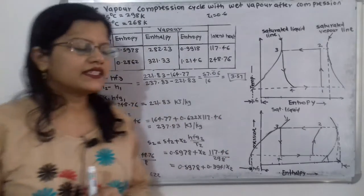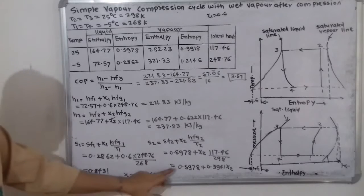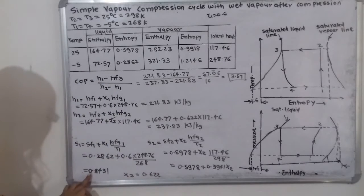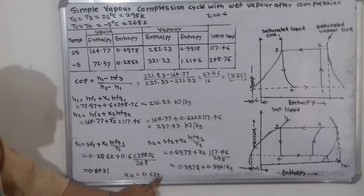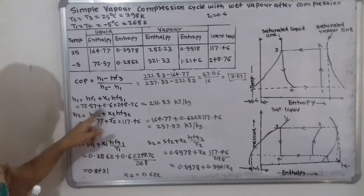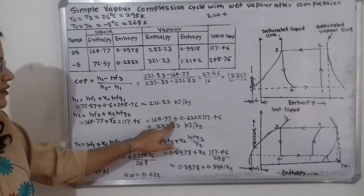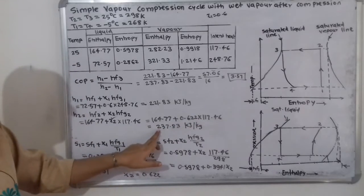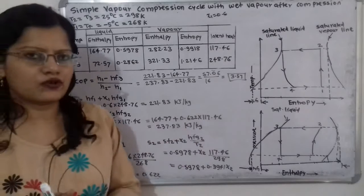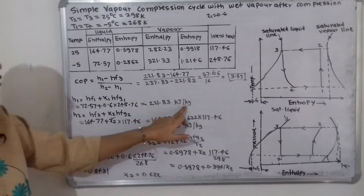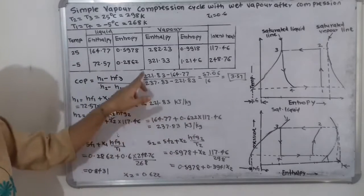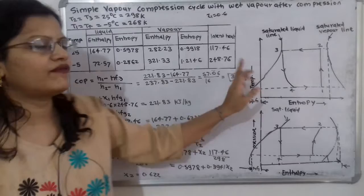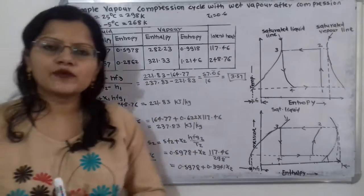Setting S1 equal to S2, the equation becomes 0.5978 plus 0.3941 times X2 is equal to 0.8431, giving X2 is equal to 0.622. Substituting into the H2 formula: H2 is equal to 164.77 plus 0.622 multiplied by 117.46, giving H2 is equal to 237.83 kJ/kg. And H1 is equal to 221.83 kJ/kg. The coefficient of performance is then 57.06 divided by 16, which is equal to 3.57.